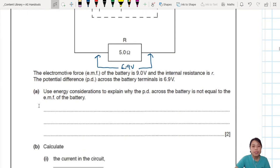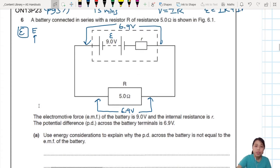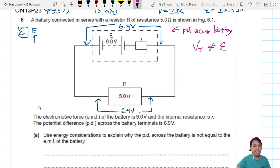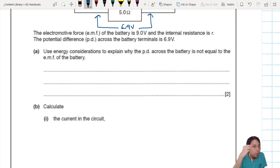Now the first part they ask us to explain. Use energy to explain why the PD across the battery, so PD across the battery is this one, is not equal to the EMF of the battery. So PD across the battery we call terminal, not equals to EMF. Why? We mentioned that. Because of the culprit, internal resistance. But how are you going to talk about that? That's only two marks here. So we need to have two main ideas. Explain. You need to explain why.